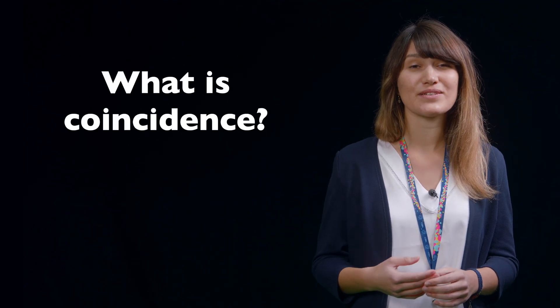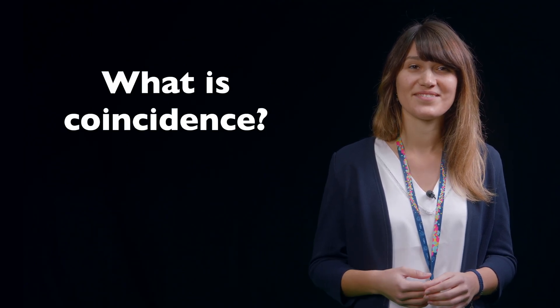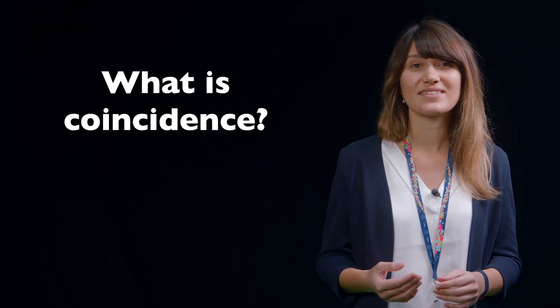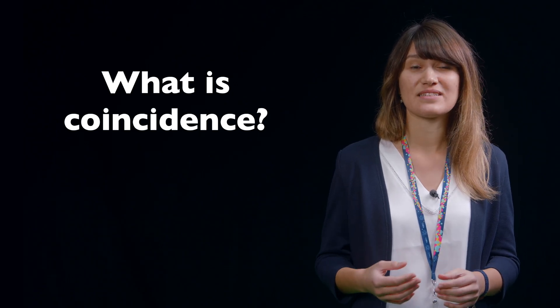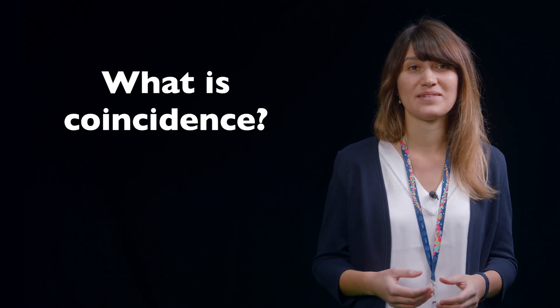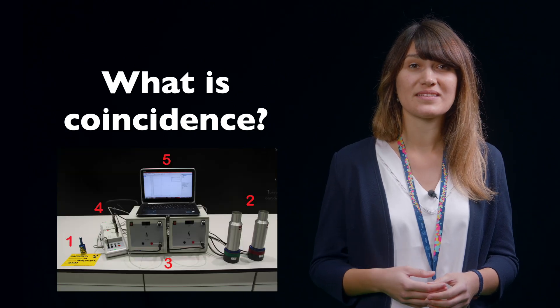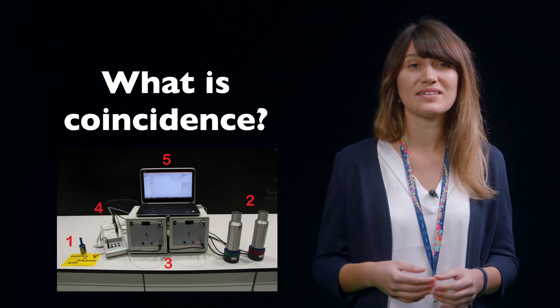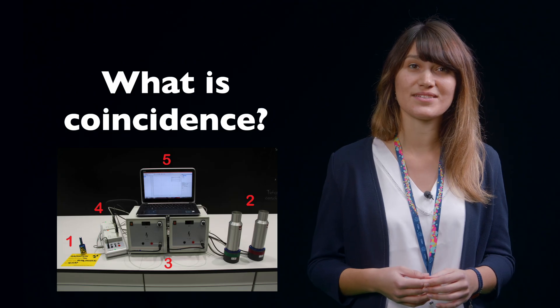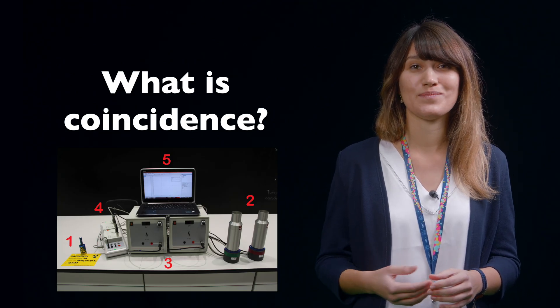In this section, you will first learn what coincidence is. Then we will conduct an experiment to measure photons in so-called coincidence mode. Let's start with learning what coincidence actually is. In science, coincidence is the presence of two signals at the same time. In our experimental setup, coincidence means that both scintillation detectors measure a photon at the same time.